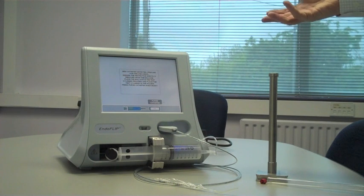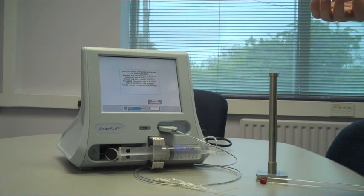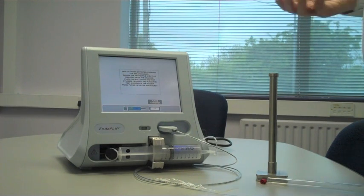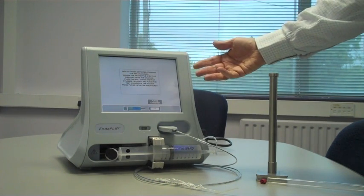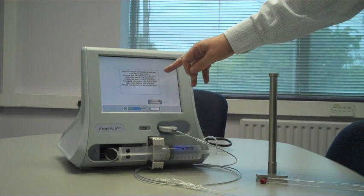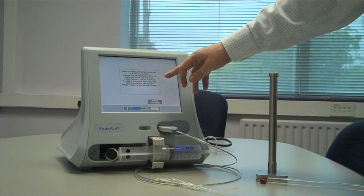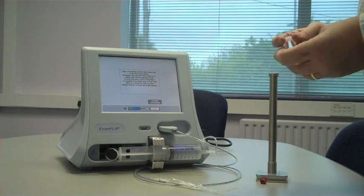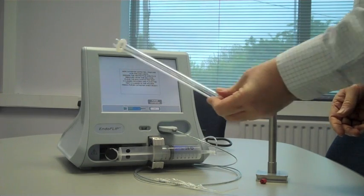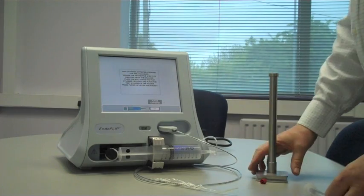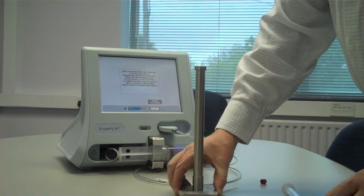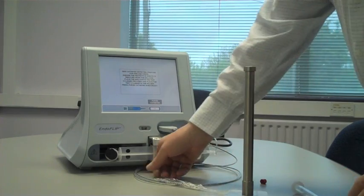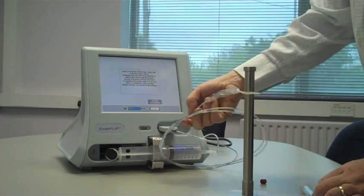You then get a message that says new catheter detected, prepare for a pre-use check, ensure the protective sheath is removed, which we've just done, and then place the balloon in the test cylinder provided. Now, there are two types of cylinder. There's this disposable version here, or more recently, we have this standalone metal version, which comes with your machine.